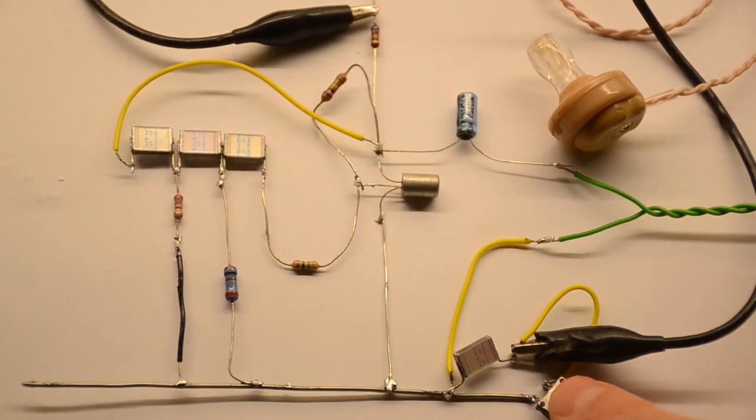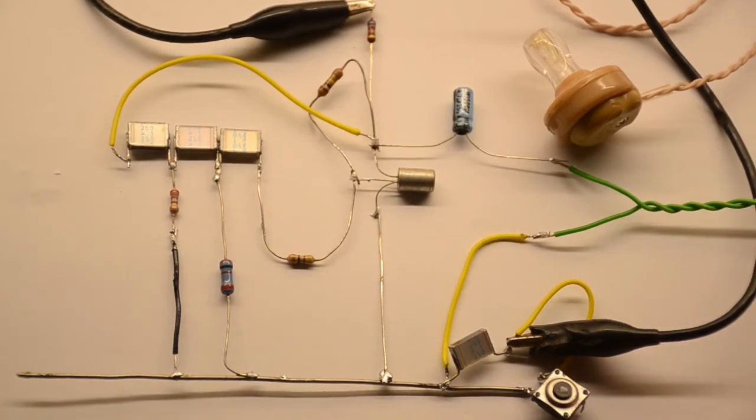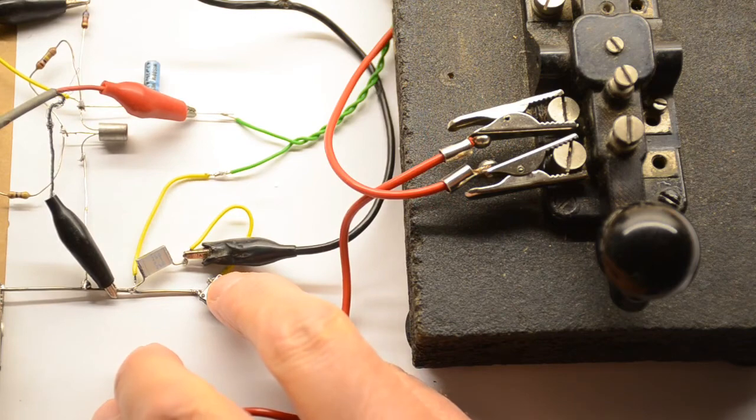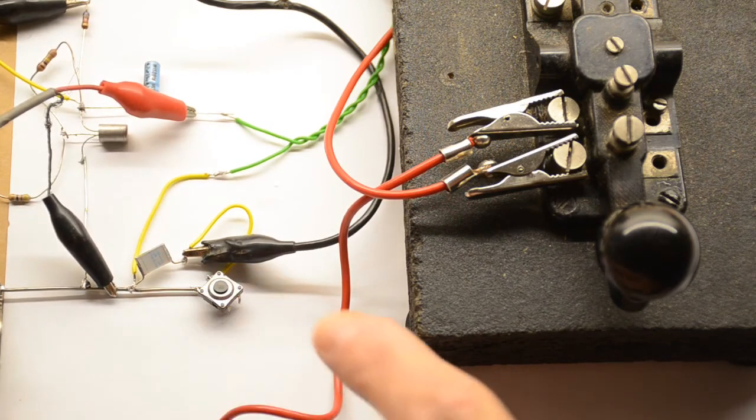Project D1 is the Morse code oscillator. This one transistor circuit can be heard quite loudly through the crystal earpiece. Let's now use the oscillator with a real morse key.